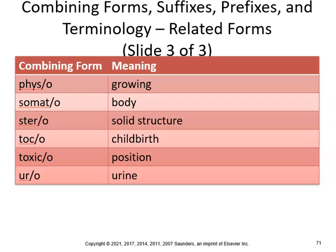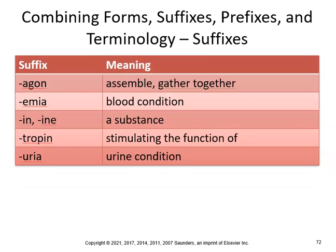Toxic means poison — you know what toxicology would be. Uro means urine, so a urologist studies the urinary system. Moving to suffixes: -agon means assemble together, so glucagon assembles sugar. -emia is a blood condition. -in means substance. -tropin means stimulating the function of. And -uria is a urine condition — you can put any prefix on that and change the meaning.